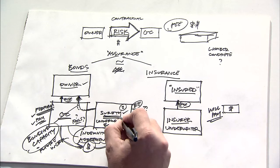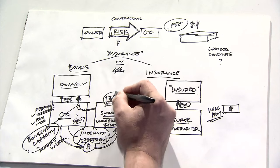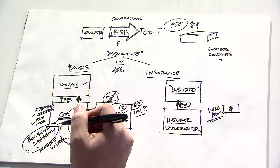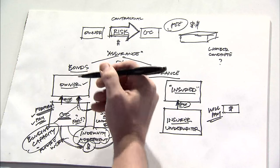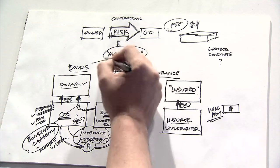On the other hand, the surety goes into a bonding proposition not planning to pay. And that's largely because the general contractor goes into that same deal not planning to fail. So that's a fundamental difference between these two forms of assurance.